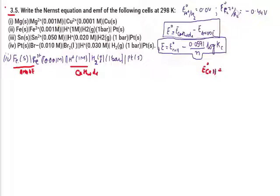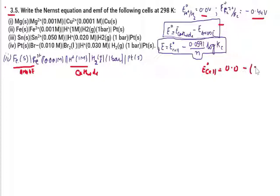At the cathode, H⁺ is reduced — the standard hydrogen electrode has a reduction potential of 0.0 V. At the anode, iron (Fe) is oxidized. We always write reduction potentials. E°cell = E°cathode − E°anode = 0.0 − (−0.44) = +0.44 V.